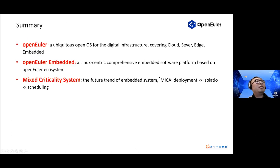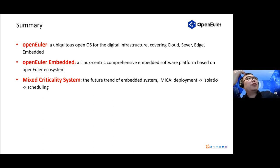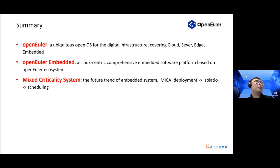In summary: OpenEuler is a ubiquitous operating system for digital infrastructure covering cloud, server, edge, and embedded. OpenEuler Embedded is a Linux-centric, comprehensive embedded software platform based on the OpenEuler ecosystem and community. Mixed critical architecture systems are the future trend of embedded systems, and we develop our own solution named Mika — including three phases: deployment, isolation, and scheduling. Welcome to OpenEuler and welcome to OpenEuler Embedded. Thank you.